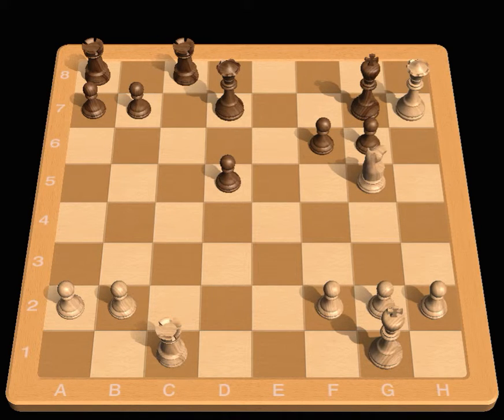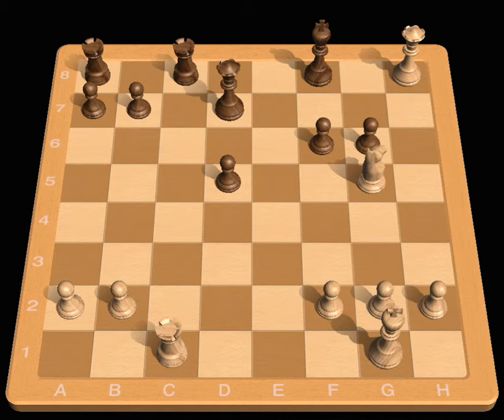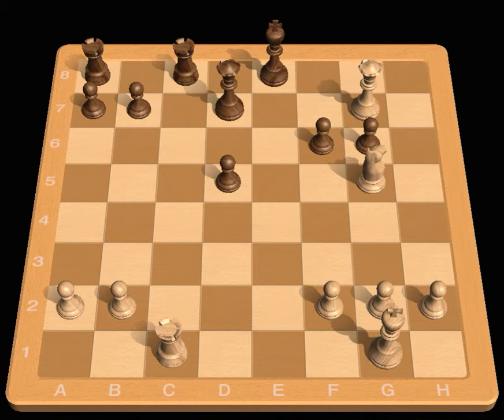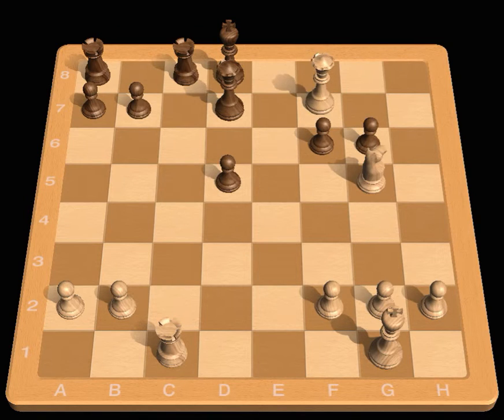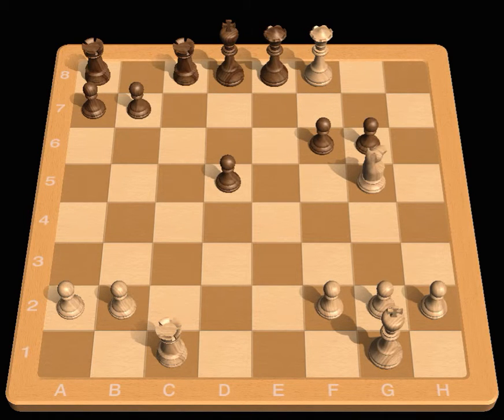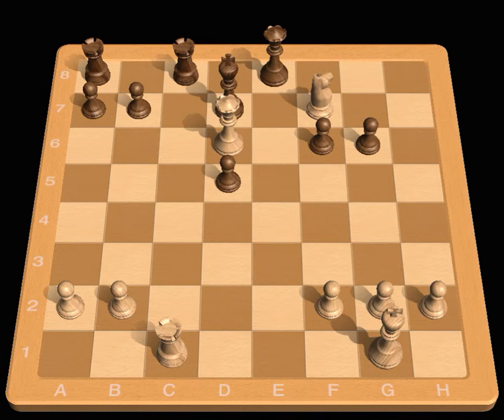Queen h7 check, King f8, Queen h8 check, King e7, Queen g7 check, King e8, Queen g8 check, King e7, Queen f7 check, King d8, Queen f8 check, Queen e8, Knight f7 check, King d7, Queen d6 checkmate. A very pleasing game that featured sacrifices both large and small. The key shot was the clearance sacrifice 17 d5, which set the stage for the final assault on Black's King.